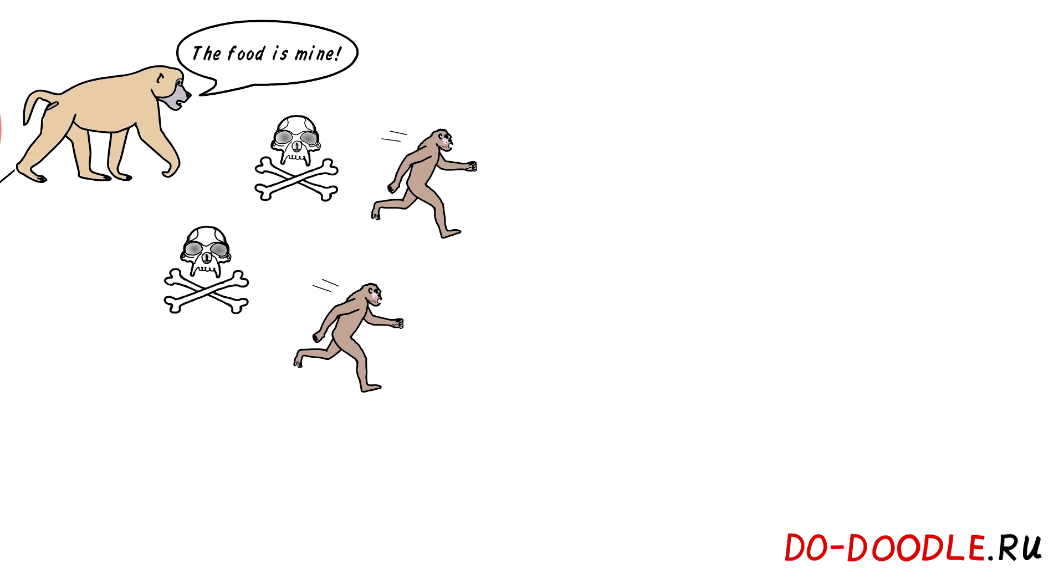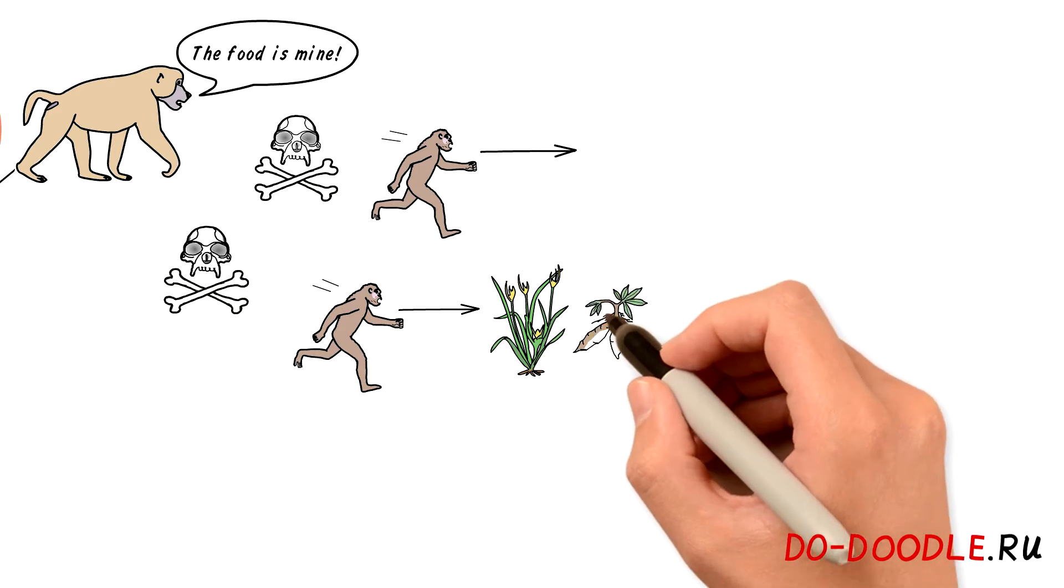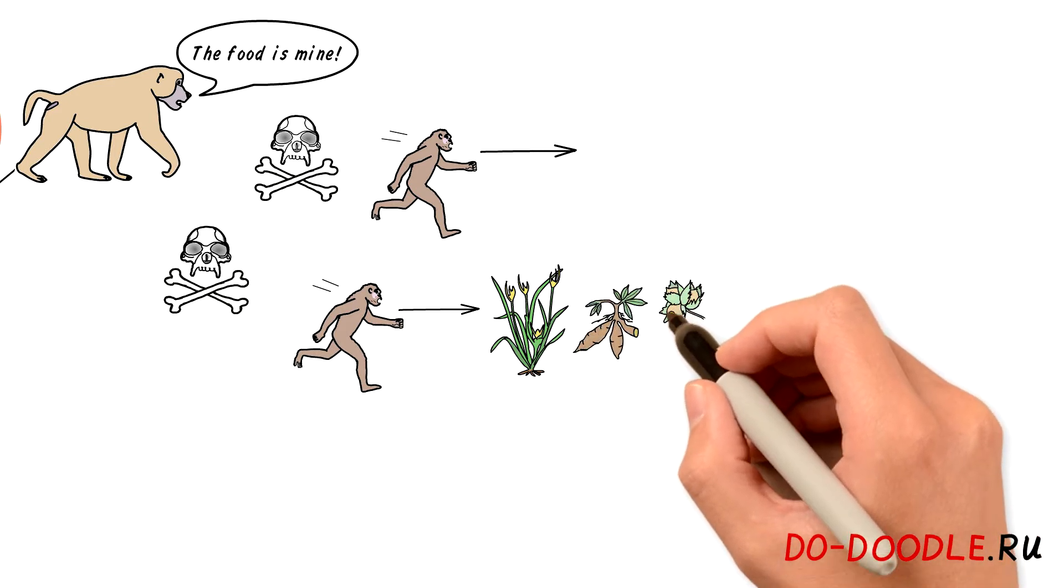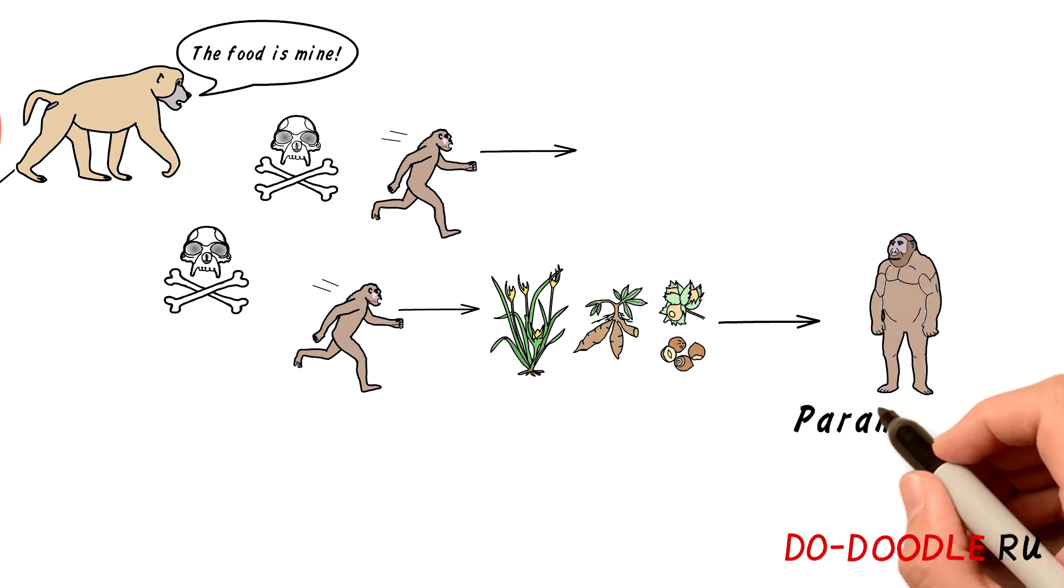But some were able to adapt to the new environment. There were two different ways to achieve this. One way was to consume dry, nutrient-poor food such as sedge, tubers and nuts. It was hard to digest, so there was not much competition for it. This type of australopiths is named Paranthropus or robust australopiths.